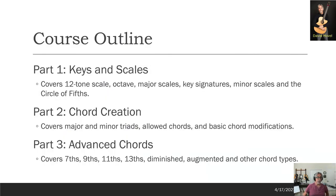There are three parts. The first part I call Keys and Scales, in which I'm going to talk about why there are 12 notes in an octave, what an octave is, making major scales from those 12 notes, what key signatures are, what minor scales are, and especially what the circle of fifths is — a very important idea. Second part is chord creation: major chords, minor chords, what chords you can use in what key, and the basics of sevenths, minor sevenths, and a few other things. Part three covers more advanced chords — ninths, elevenths, thirteens, diminisheds, augmenteds — things that are really vital to playing a large repertoire of songs.